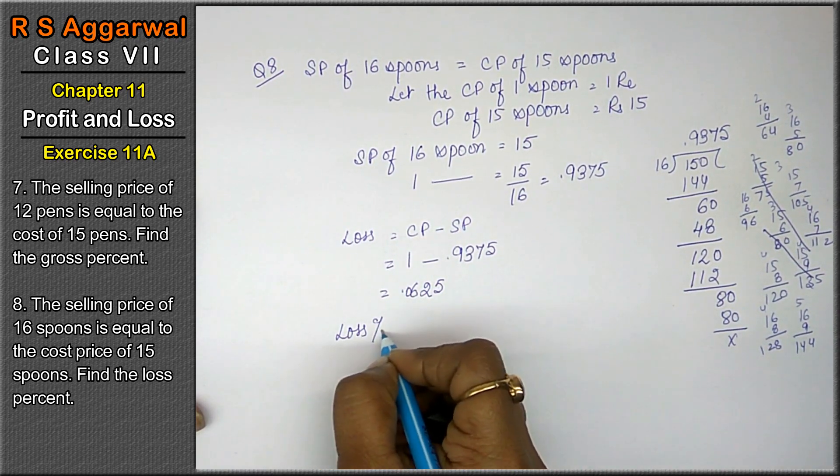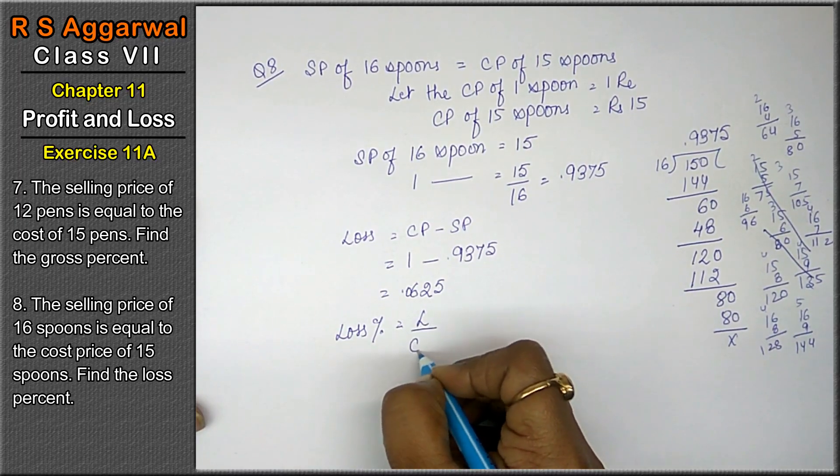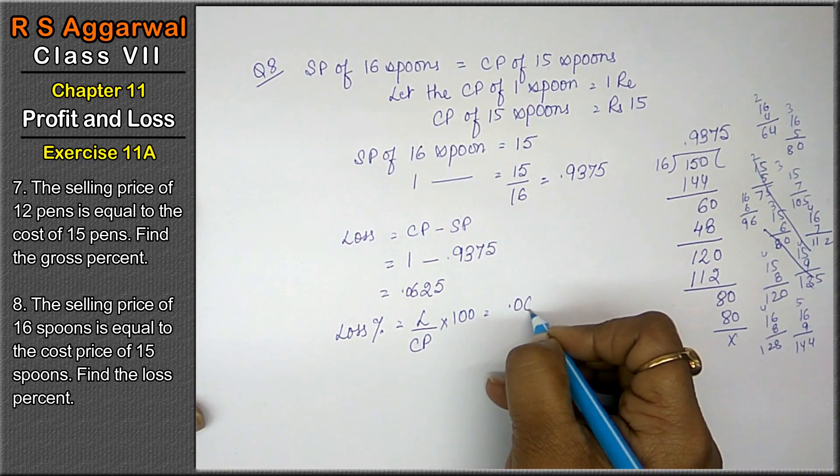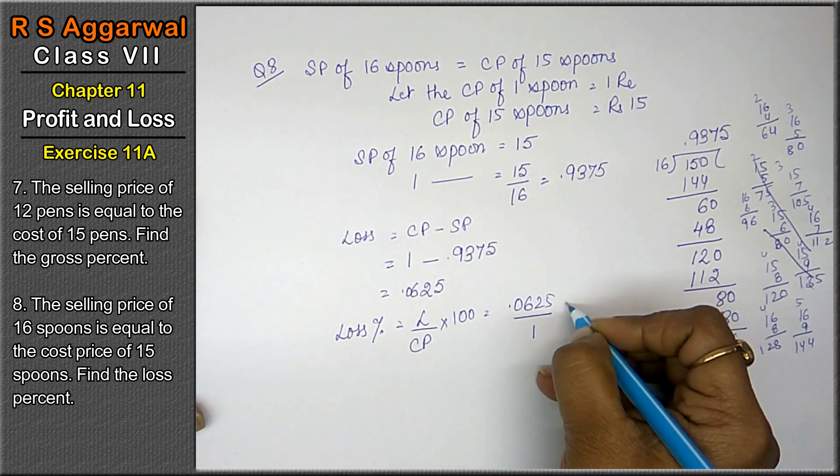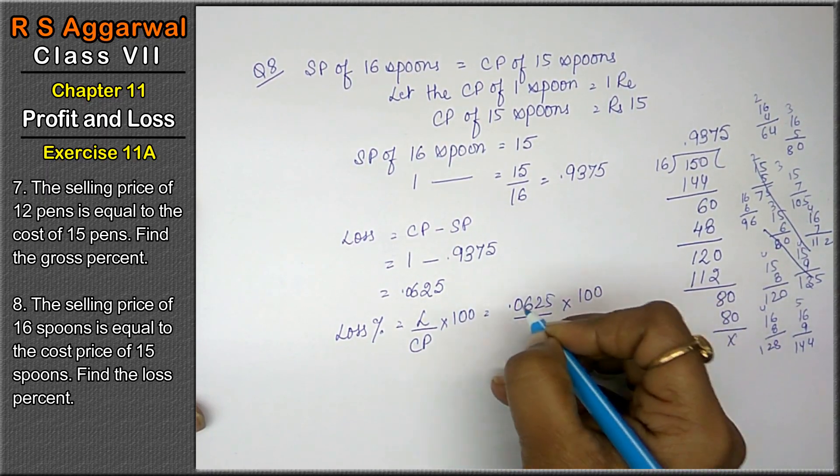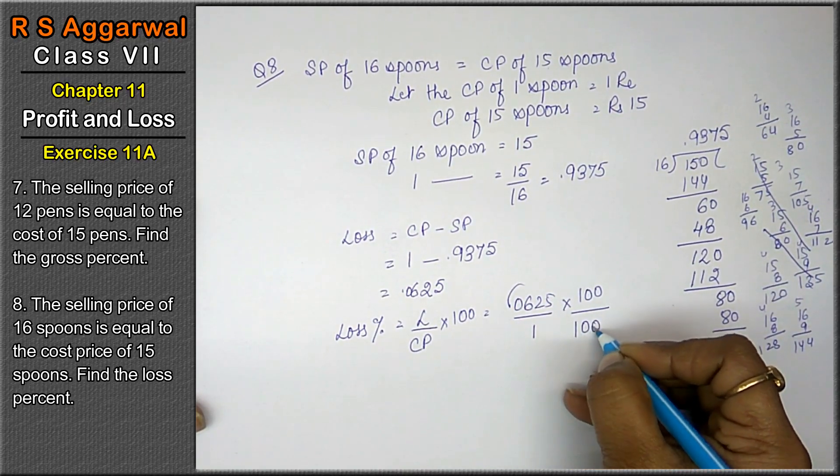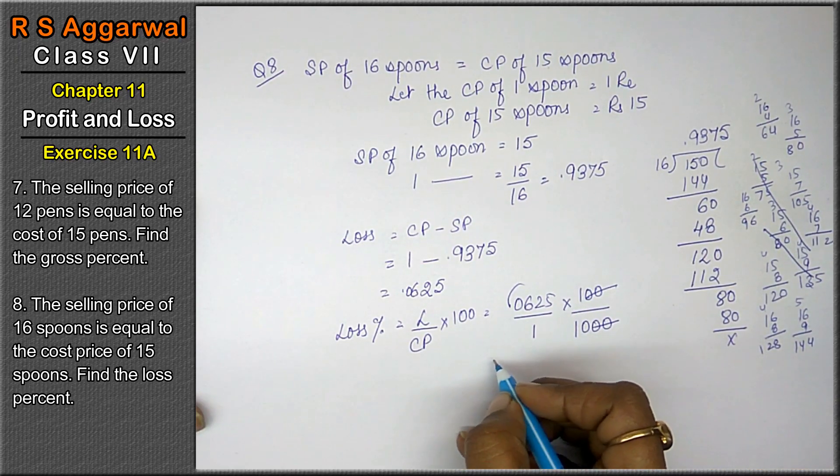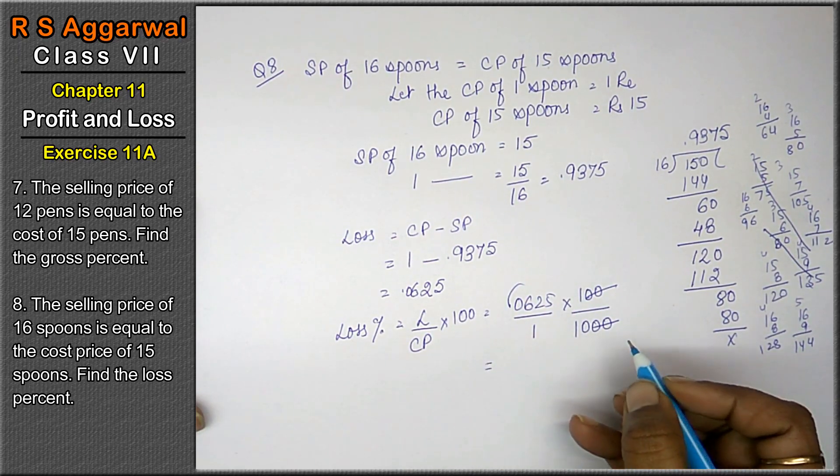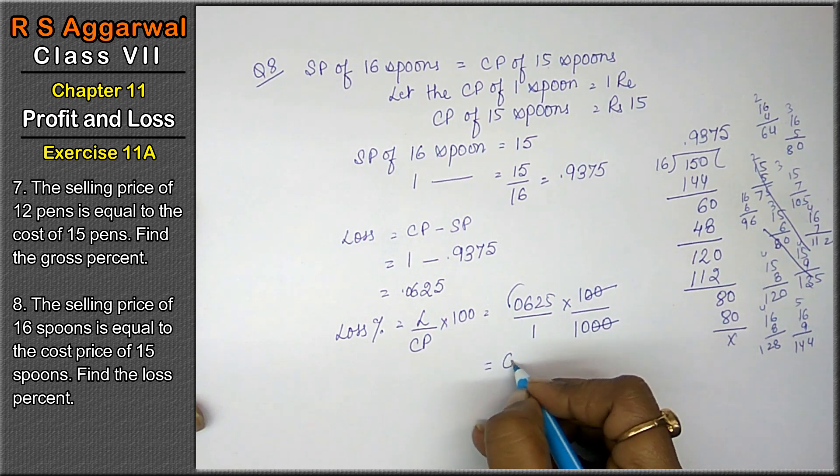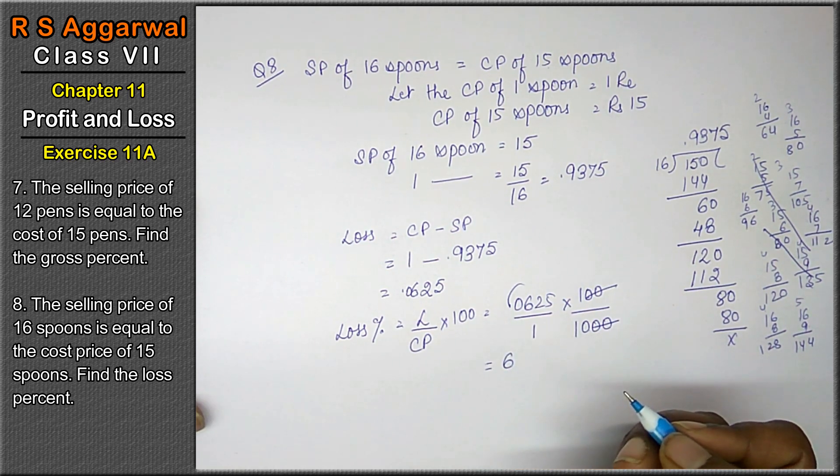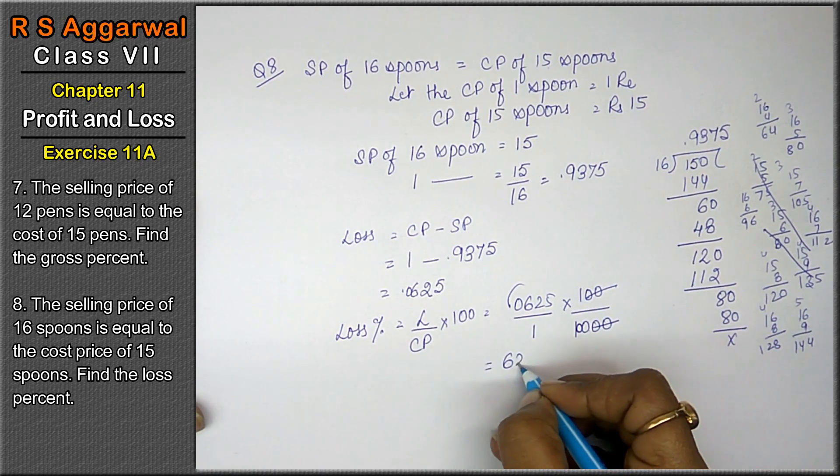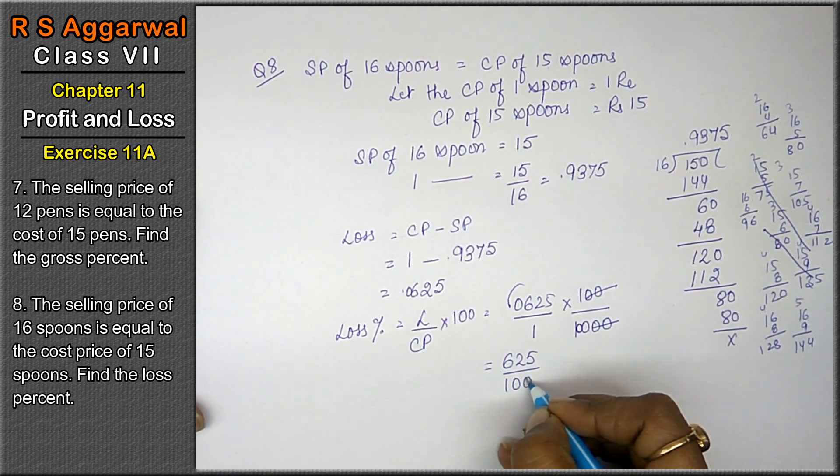So loss percent equals loss upon CP into 100. Loss was 0.0625, CP is 1, multiply by 100. Remove the point, divide by 1000. Cancel two zeros from top and bottom, we get 625 upon 100.